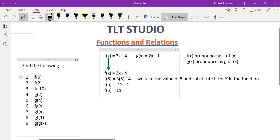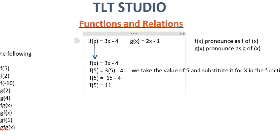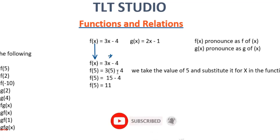To find f of 5, all we would do is substitute the value of 5 anywhere you see x in the function. So we have f of 5 equal 3 times 5 minus 4, which is 15 minus 4, which is 11.